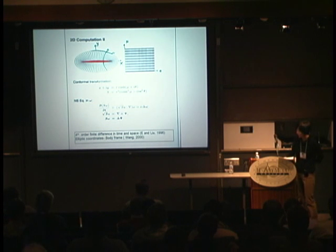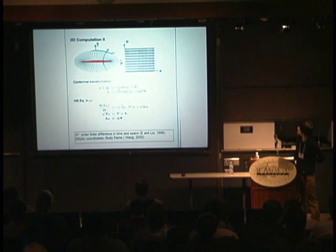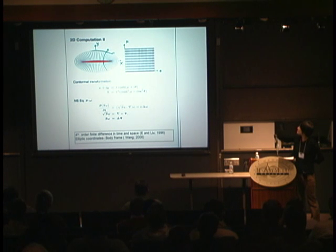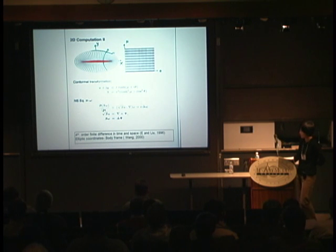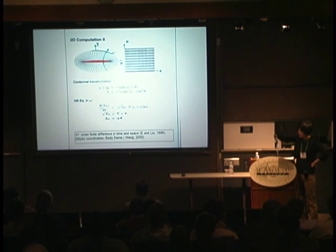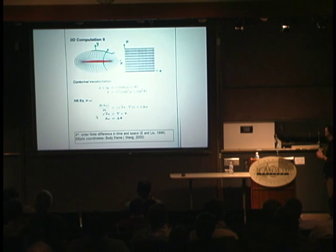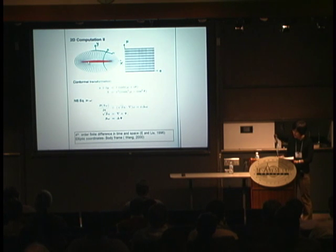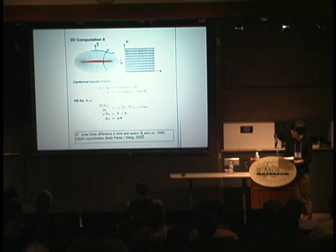Writing the Navier-Stokes equation in this conformal map is more or less the same as the original. I write everything in terms of stream function and vorticity — the vorticity is the curl of the velocity — and we solve this system in the co-rotating frame. The underlying finite difference scheme is fourth order in time and space, from Ian Liu 1996, adapted for the conformal map.